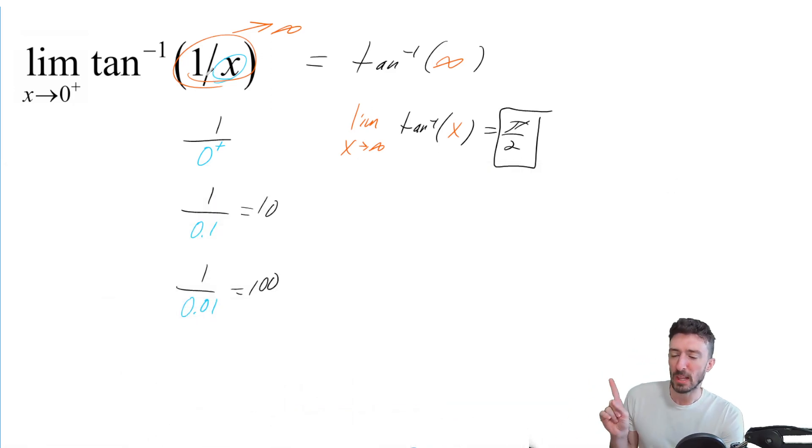Real quick, as x gets closer to zero, turns out the fraction here gets closer to infinity. And that just means you need to figure out what's happening as x gets closer to infinity in tan inverse x. And it turns out that answer is pi over two.